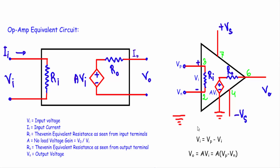Now I will show you the equivalent circuit of an operational amplifier. If you recall the model of an amplifier, we apply a low voltage signal VI, and as a result an input current flows. We can deduce the Thevenin equivalent resistance with respect to the input terminals, which is known as input resistance RI. This input voltage is amplified by an amount A, shown with a voltage-dependent voltage source AVI, and we can deduce the output resistance RO — the Thevenin equivalent resistance seen from the output terminal. However, this circuit contains only a single input, whereas an operational amplifier takes two inputs.